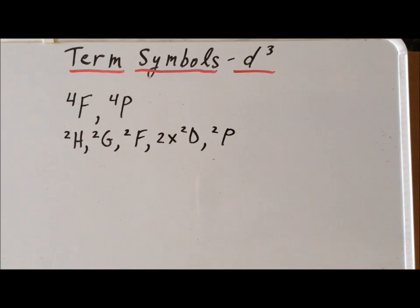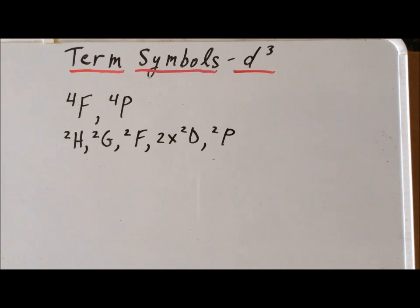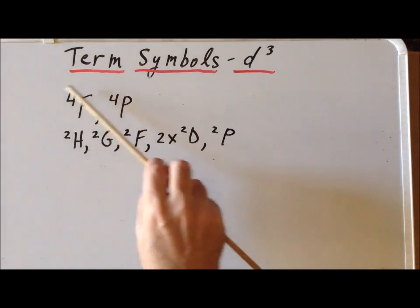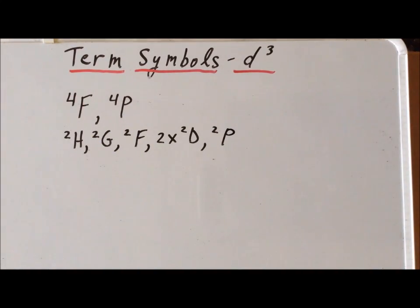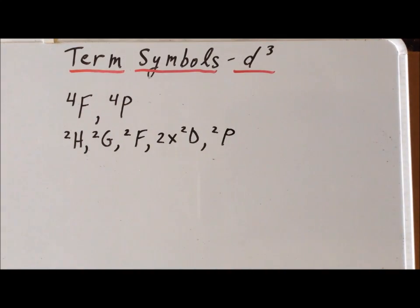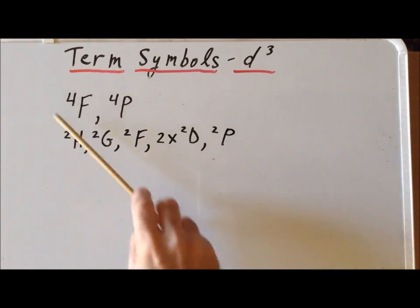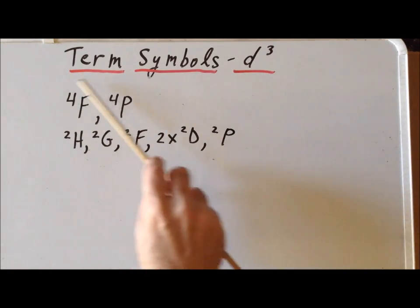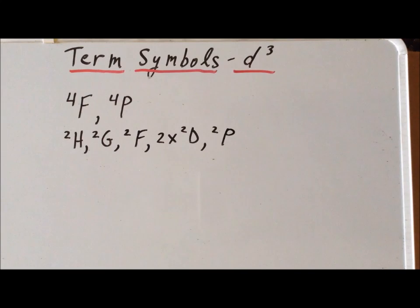Now we are looking for the ground state. Recall that by Hund's first rule, the ground state will have the maximum spin. A quartet state has a spin of three halves, whereas a doublet state has a spin of one half. So Hund's first rule tells us the ground state must come from one of the two quartet terms, since they are the only two quartet terms we have.